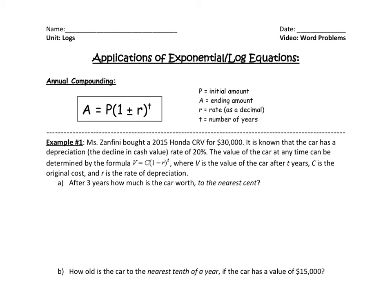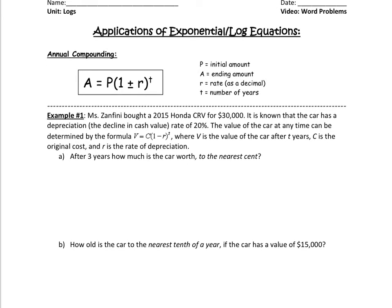Hi everyone, in today's lesson we're going to talk about how to solve word problems involving logs. Example number one: Miss Sanfini bought a 2015 Honda CRV for $30,000. It is known that the car has a depreciation or declining cash value rate of 20%. The value of the car at any time can be determined by the formula V equals C times (1 minus R) to the T power, where V is the value of the car after T years, C is the original cost, and R is the rate of depreciation. So after three years, how much is the car worth to the nearest cent?